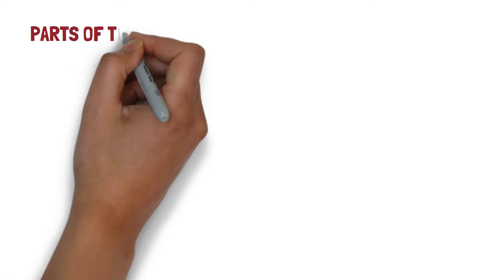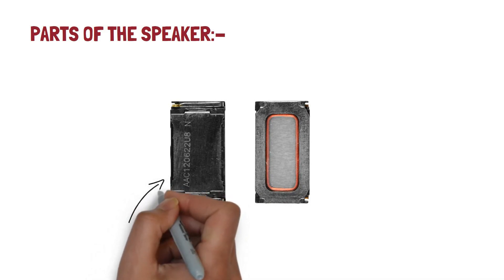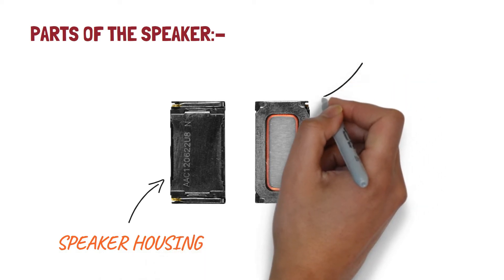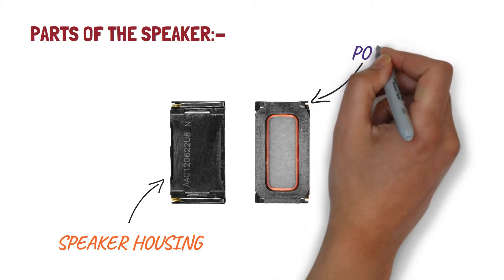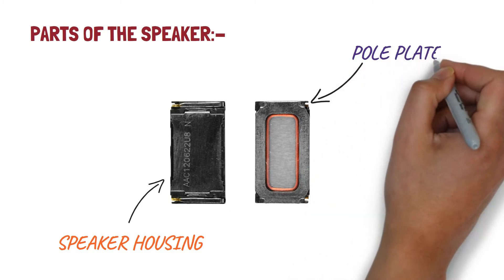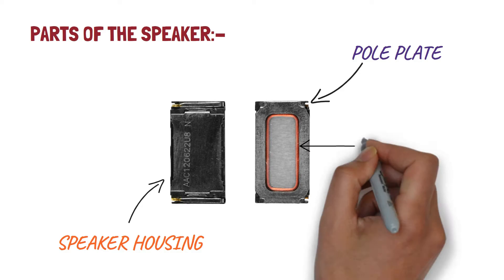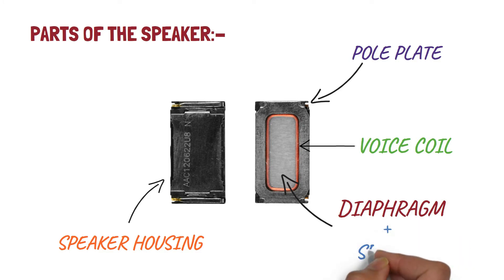Let's discuss the different parts of the speaker and how they are arranged. On the outside, we have a speaker housing which holds a magnet inside it. The pole plate covers the magnet and keeps its magnetic field inside the speaker's body so it does not impact other devices inside the smartphone. There is a voice coil — a tiny coil of wire that generates pressure waves by vibrating the diaphragm. There is also a part called a spider which acts as a suspension and helps in proper movement of the voice coil.